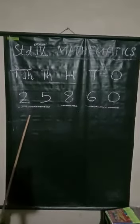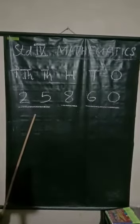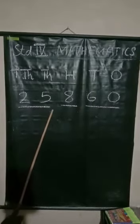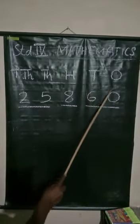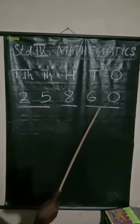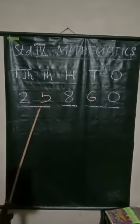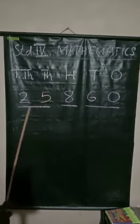Here we have another number. I break this number into three groups: tens and ones in one group, hundreds in another group, and thousands and ten-thousands in another group.